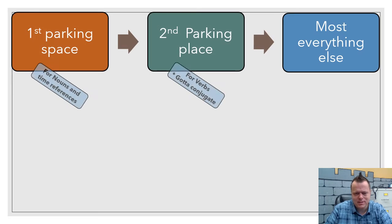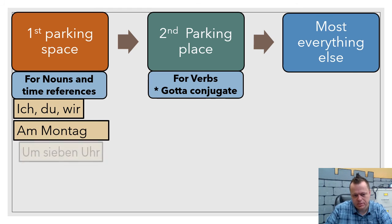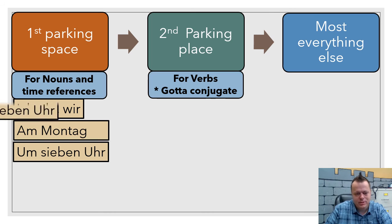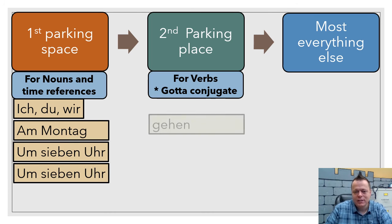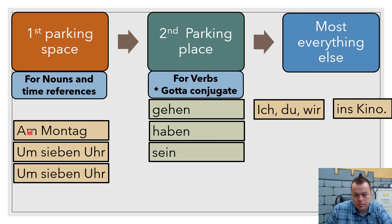So let's look at this and make sentences as best we can. We know that we have ich, du, and wir. Am Montag, um sieben Uhr, and it's probably gonna be um sieben Uhr again. And then we have gehen, we have haben. But let's say we wanted to take the word or the phrase am Montag gehen wir ins Kino. So notice how this pronoun, the wir, instead of being in that first position, got kicked over here.